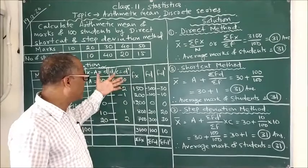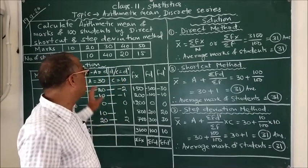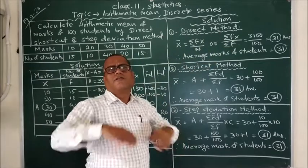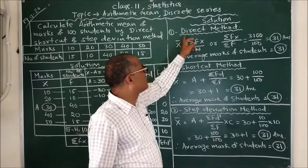So in this way we first made the table. After that just only we have to write the formula, put the values and find the solution. So come to direct method.